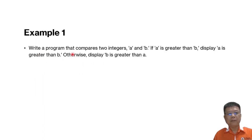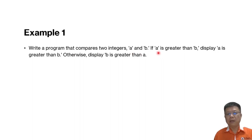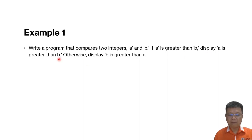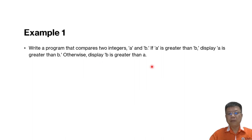Let's say example one: write a program that compares two integers, A and B. You want to compare A and B integers. So if A is greater than B, we display 'A is greater than B'. Otherwise, we display 'B is greater than A'. Very simple example.